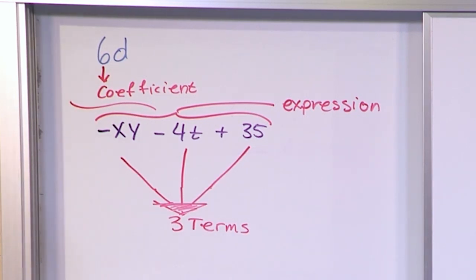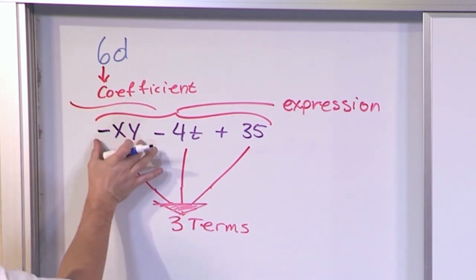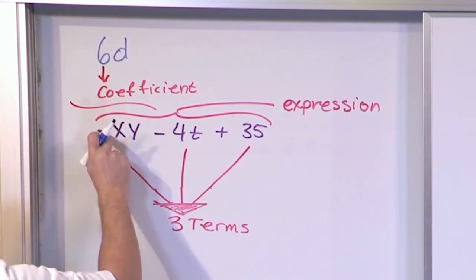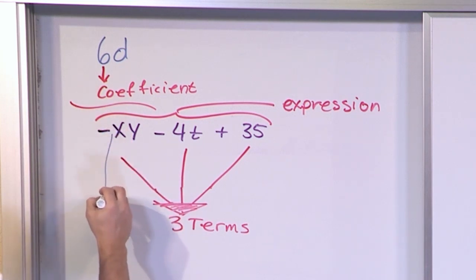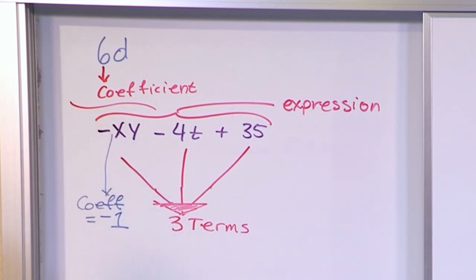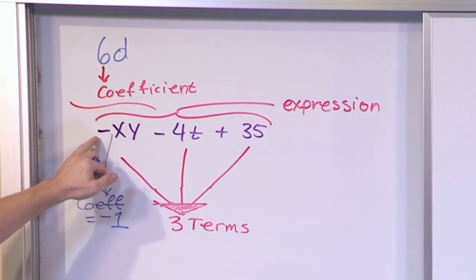So what is the coefficient of the first term of this expression? Well, this is the first term. The coefficient is the number in front. So here, the coefficient is equal to negative one. That's the number that's sitting out in front. I know there's no one there, but because there's always a one implied there, and there's a negative there, the coefficient's negative one.